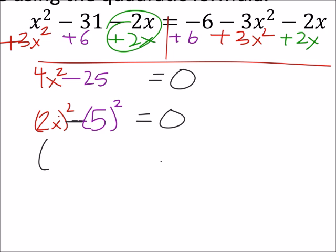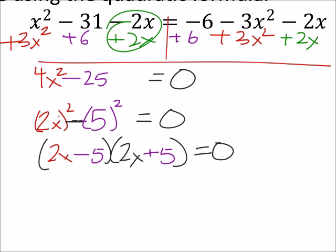So, I can change this to 2x minus 5 and also 2x plus 5. This equals 0, so if I solve each one of these equal to 0, 2x minus 5 can equal 0, I get x equals 5 halves,